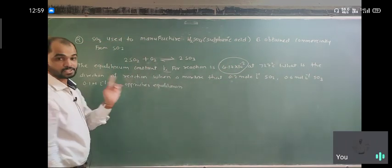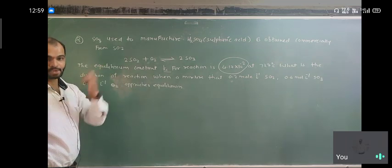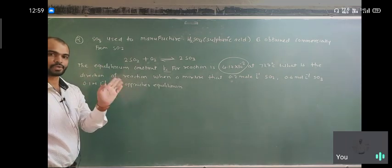Very important: Q is greater than K, reaction is backward. If K is greater than Q, reaction is forward.